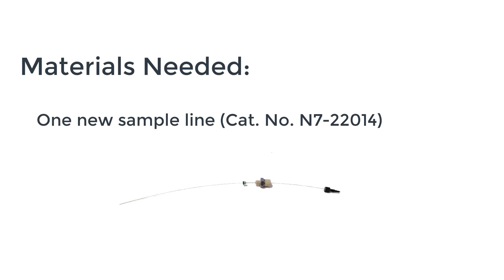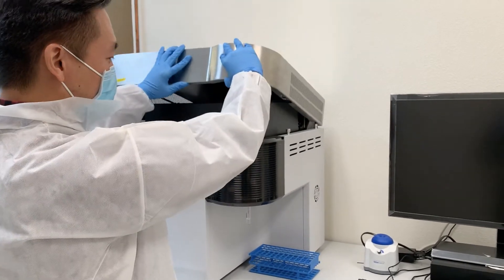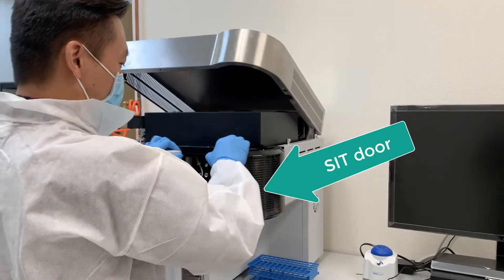To change the sample line, all you need is a new one which you can order from our website at cytecbio.com using the part information shown here. With your cytometer powered off, go ahead and open up your system so you can open the sip access door.